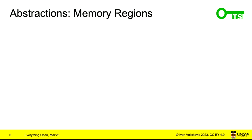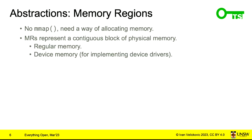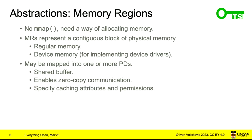The next abstraction is memory regions — a contiguous block of physical memory. This can be used for regular memory, such as a shared buffer between protection domains, or for device memory, since device drivers run at user level and need to access device registers. Memory regions may be mapped into one or more protection domains, enabling zero-copy communication since both domains share the same memory.